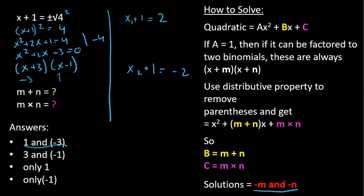And then we just simply move the number next to x to the right. Here we do minus 1, here we do minus 1 as well, and we get x1 equals 1 and x2 equals minus 3.